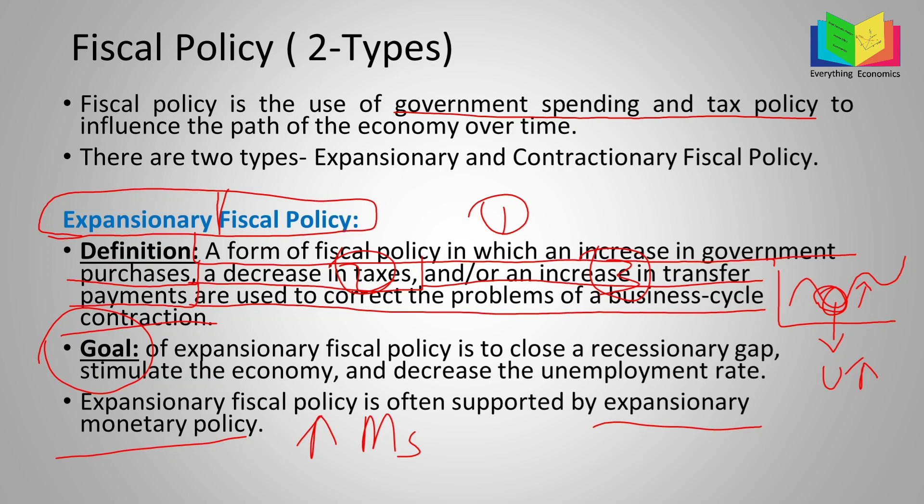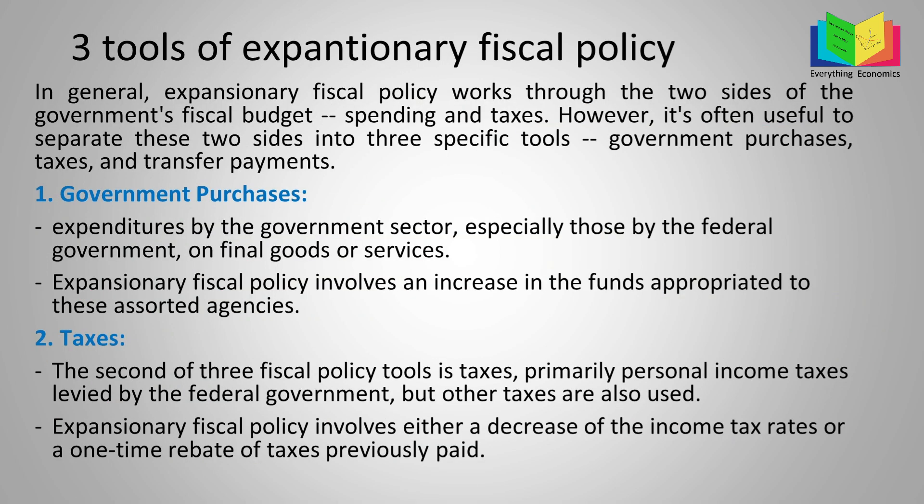There are three tools of expansionary fiscal policy. Expansionary fiscal policy works through the two sides of the government's fiscal budget: spending and taxes. However, it's useful to separate these into three specific tools: government purchases, taxes, and transfer payments.